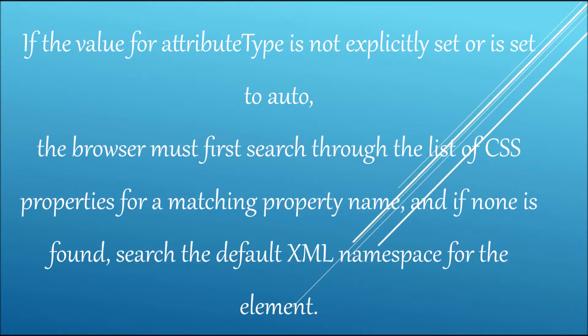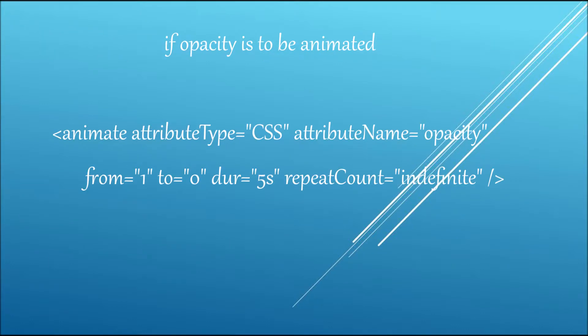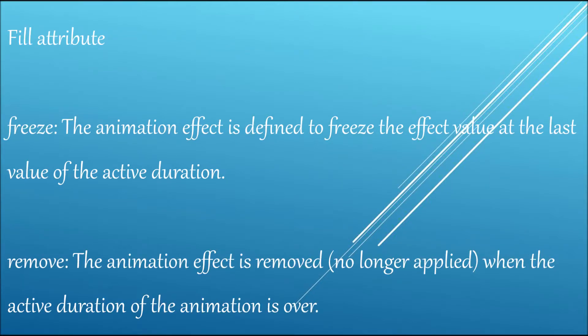Next, 'attributeType' — if attributeType is not set or is set to auto, the browser must search through the list of CSS properties for a matching property name, and if none is found, search in the default XML namespace for the element. In the previous example, attributeName is 'opacity', which is a CSS property, so attributeType will be 'CSS'.